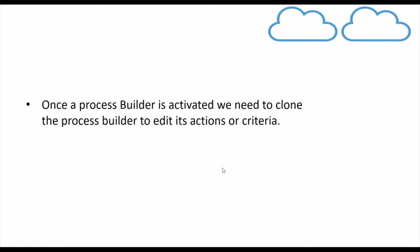One thing to be noted: once you have created your Process Builder and activated it, if you want to make changes to the actions or criteria, you need to clone the existing activated Process Builder and then make changes to the new version. You cannot make changes directly to an activated Process Builder.